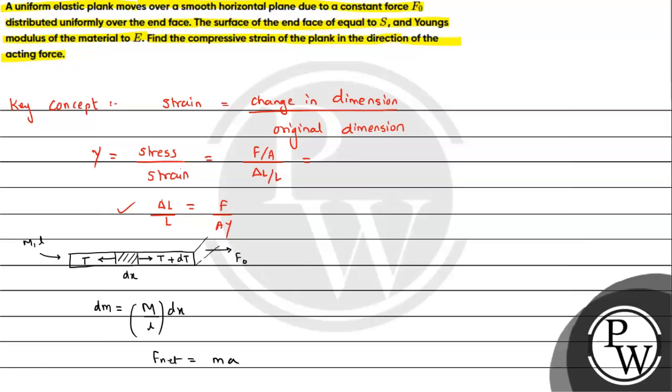Now by Newton's second law, F net equals ma. We can write the net force as T plus dt minus T, which will be dt only, and that will equal dm into a. Further on simplification, dt equals dm which is m by L dx into a.